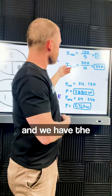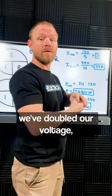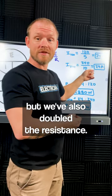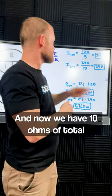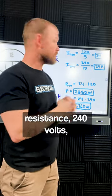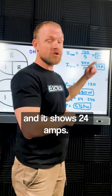But if we lose the neutral and we have the 240 volt circuit, we've doubled our voltage, but we've also doubled the resistance. We put both resistors in series, so there's twice as much resistance. So now we have 10 ohms of total resistance, 240 volts, and it shows 24 amps.